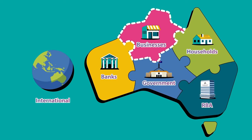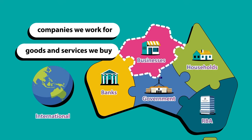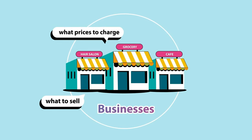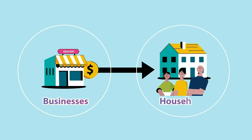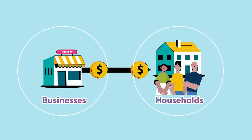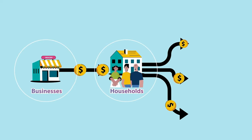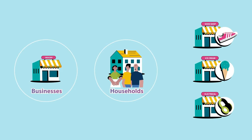Businesses are another sector of our economy. This sector includes all of the companies we work for and whose goods and services we buy. They decide what to sell, what prices to charge, and who to employ. Businesses pay wages to households so they can buy things from other businesses, helping money flow around the economy.